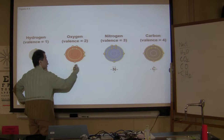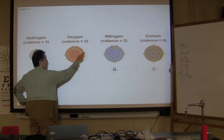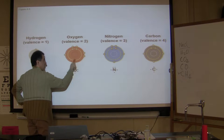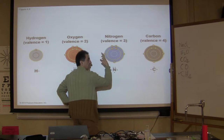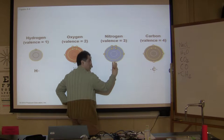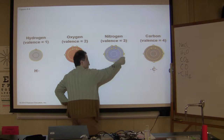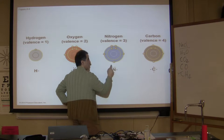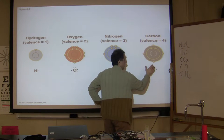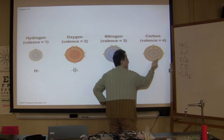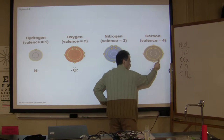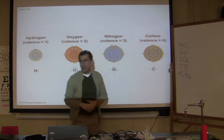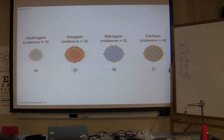The maximum number of electrons in the outer shell is eight. For nitrogen, which has five electrons, it needs three more to reach eight. Carbon has four electrons, so it needs four more to complete its outer shell — which is why carbon can bond with four other atoms, as I said at the beginning.